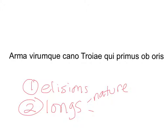Diphthongs are combinations of two vowels that get pronounced as one sound. A good example is on this word right here — we say 'Troiae.' The O-I gets pronounced together as 'Troy,' and then the A-E gets pronounced together. So those are diphthongs. We also have long by position.